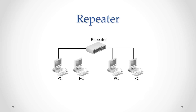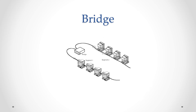Bridges are devices that connect one LAN to another that uses the same protocol. Protocols are communication rules, so it is necessary that bridges connect the same sort of networks. They are often used to connect together different parts of a LAN so that they can function as a single LAN. Bridges are used to interconnect LANs or parts of LANs, since sending out every data packet to all possible destinations would quickly flood larger networks with unnecessary traffic.